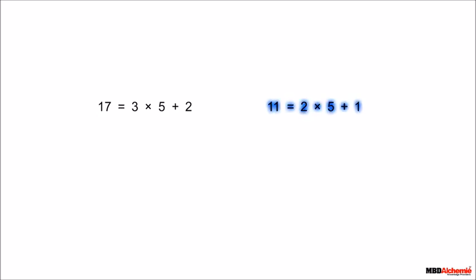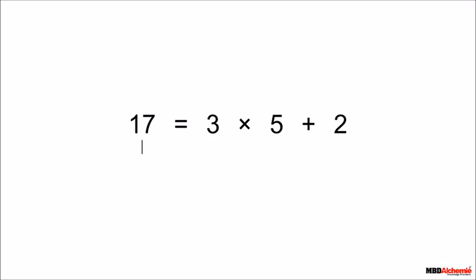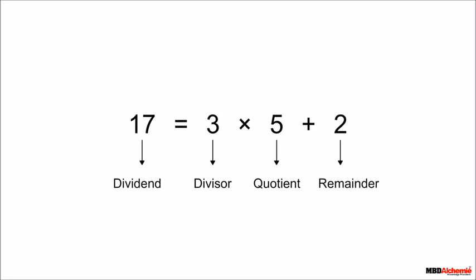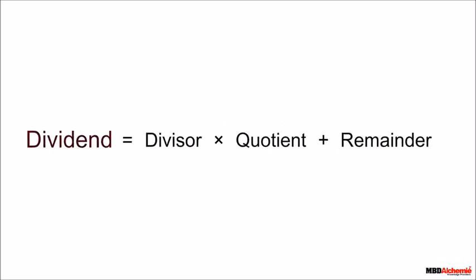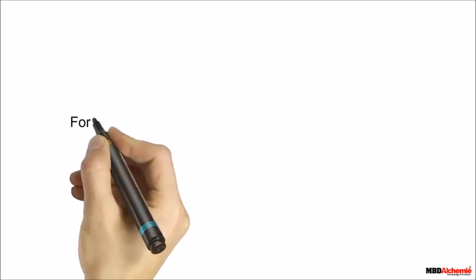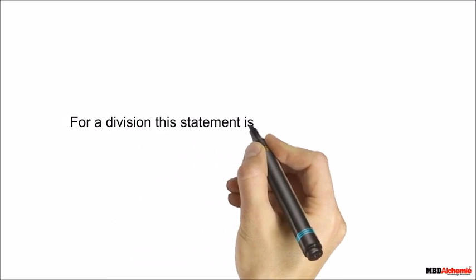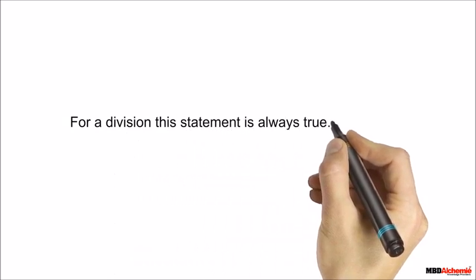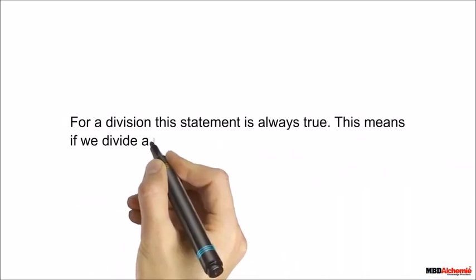Consider this division statement: 17 is the dividend, 3 is the divisor, 5 is the quotient, and 2 is the remainder. In general, we can say: dividend = divisor × quotient + remainder. For any division, this statement is always true.